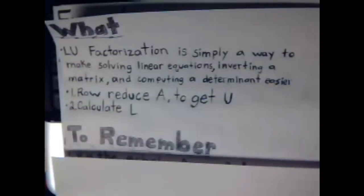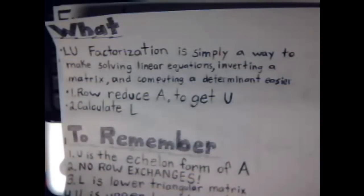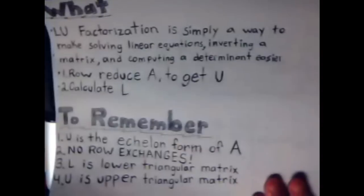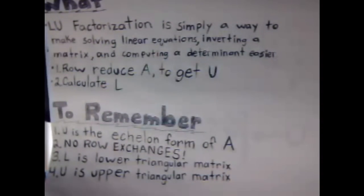Some important things to remember, though, are U is just the echelon form of A. If you know how to row reduce, you just reduce A to echelon form, not to reduced echelon form, and that is your U value.